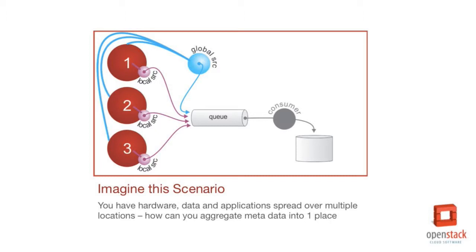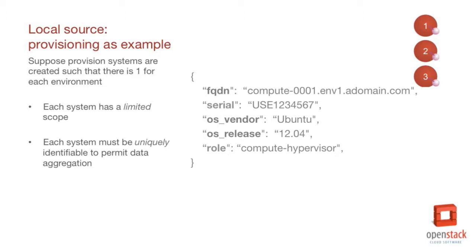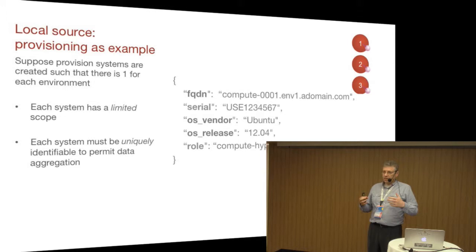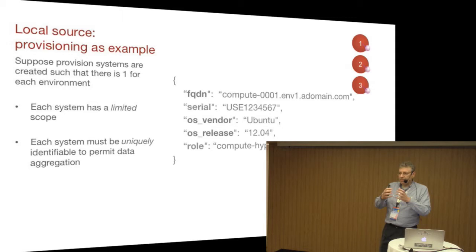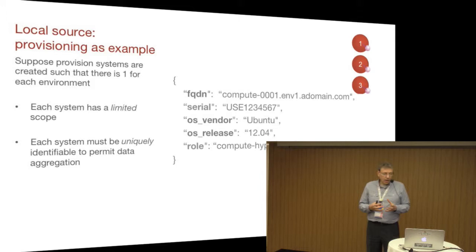Let's imagine we're going to talk about inventory. I've got all these racks of equipment and some way that I'm provisioning servers up to do different things. One of the systems is going to be local — for provisioning — a system that would go out and put bare metal into a particular state, get it configured with BIOS firmware RAID. Each of these local systems would have a very limited scope; they only know about their own environment. So we make sure each one of these systems has a unique ID to avoid clashes.